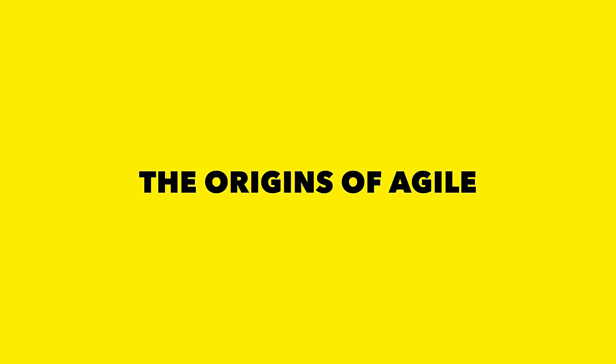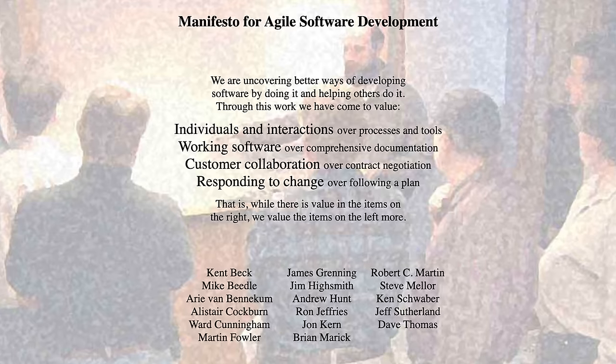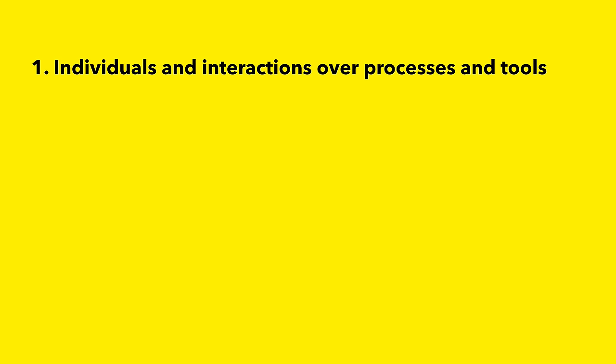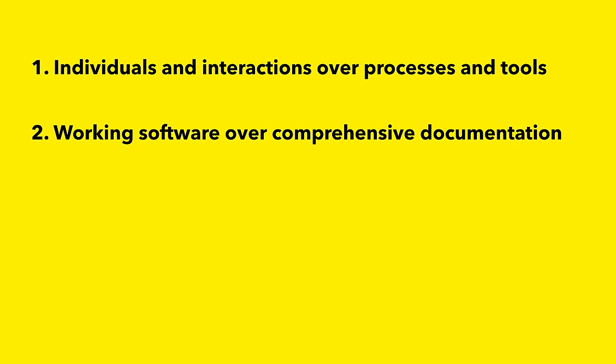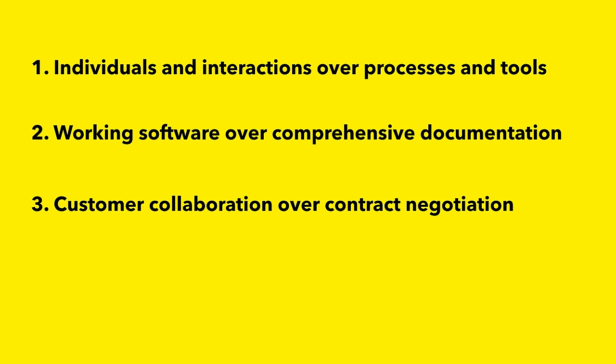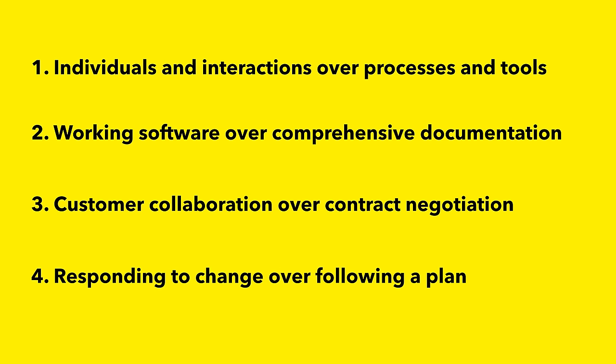Let's take a moment to explore the origins of Agile. The concept of Agile development can be traced back to the early 1990s, but it really took shape in 2001 with the creation of the Agile Manifesto. The Agile Manifesto outlines four core values: individuals and interactions over processes and tools, working software over comprehensive documentation, customer collaboration over contract negotiation, and responding to change over following a plan. These values emphasise the importance of people, collaboration, and adaptability in the software development process.